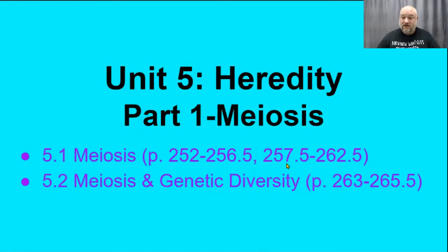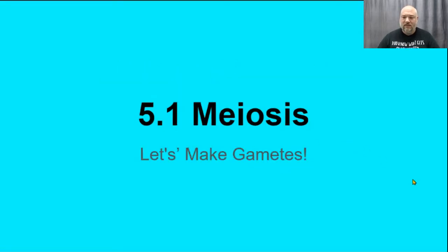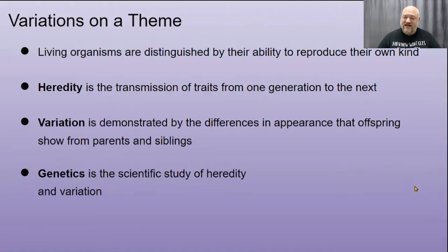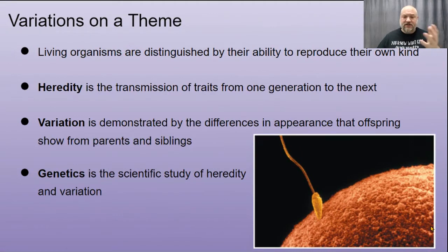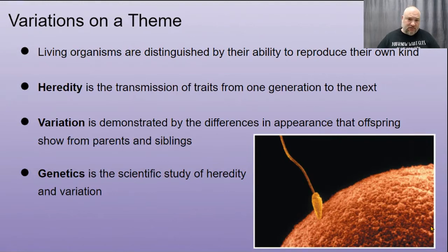Let's get started on our notes on heredity, part one: meiosis, and part two: meiosis and genetic diversity. Living organisms are distinguished by their ability to reproduce their own kind. Heredity is the transmission of traits from one generation to the next, and variation is demonstrated by the differences in appearance that offspring show from their parents.